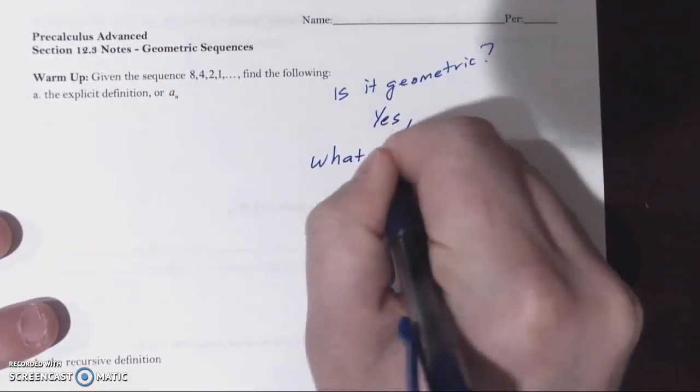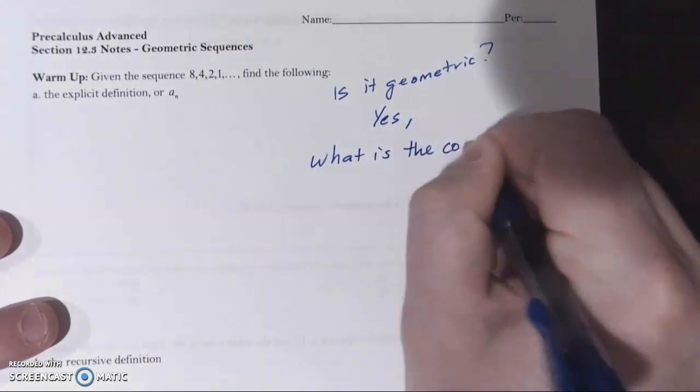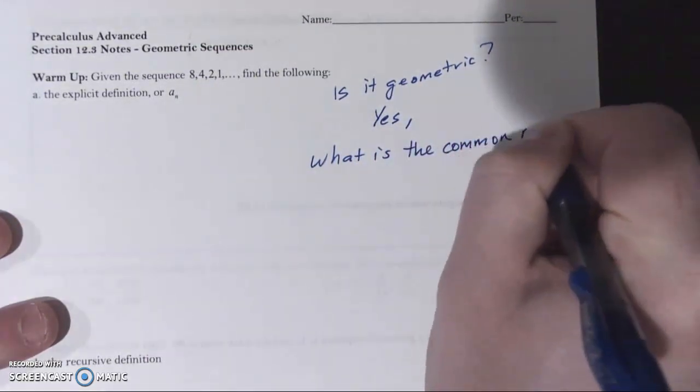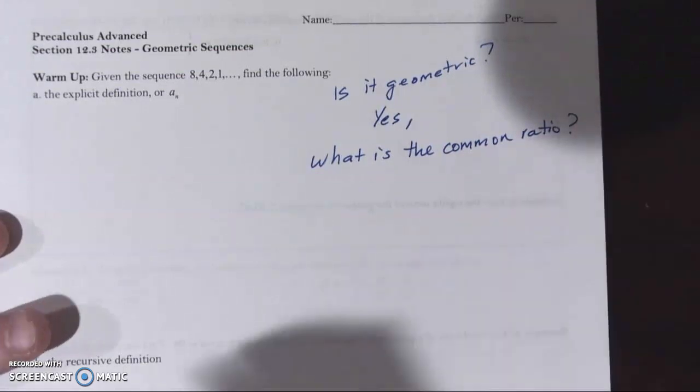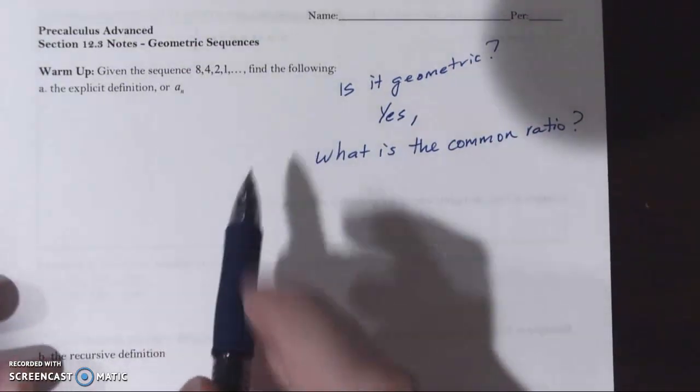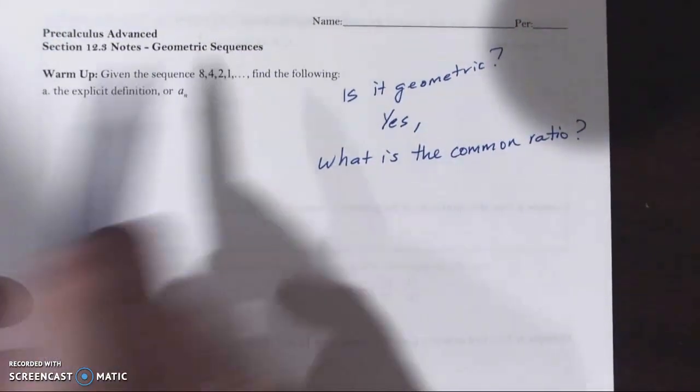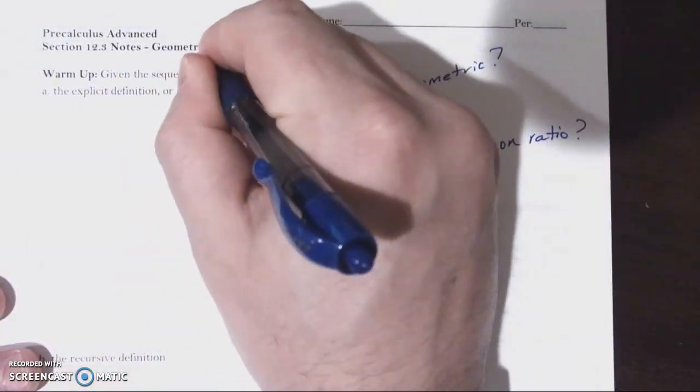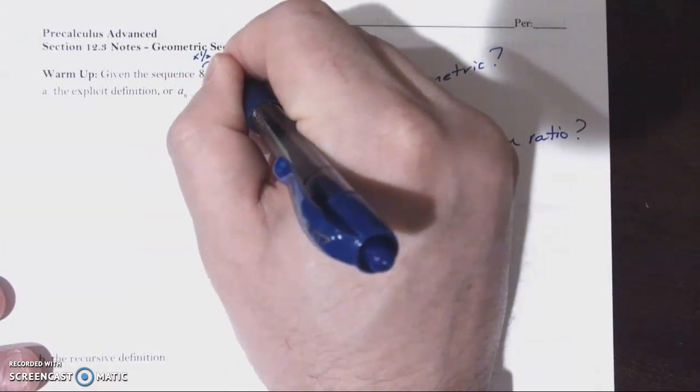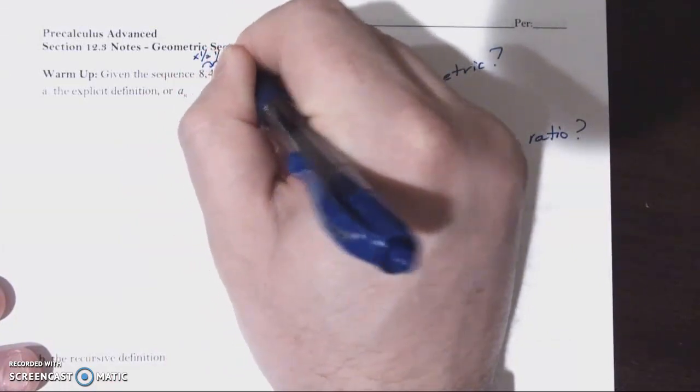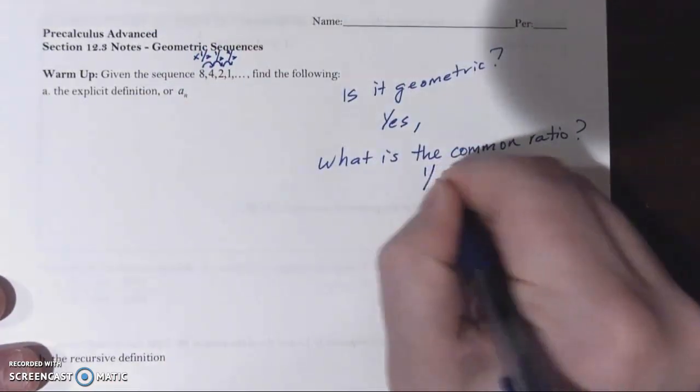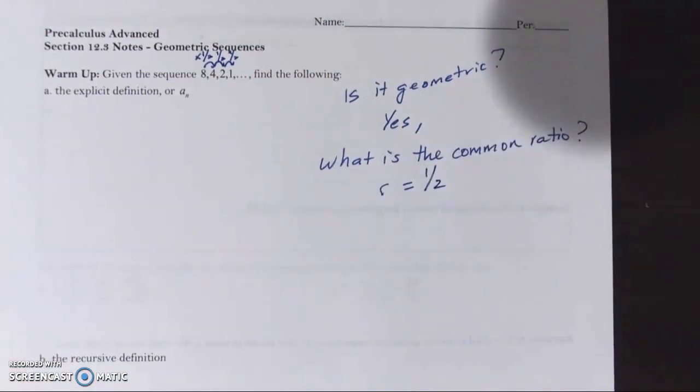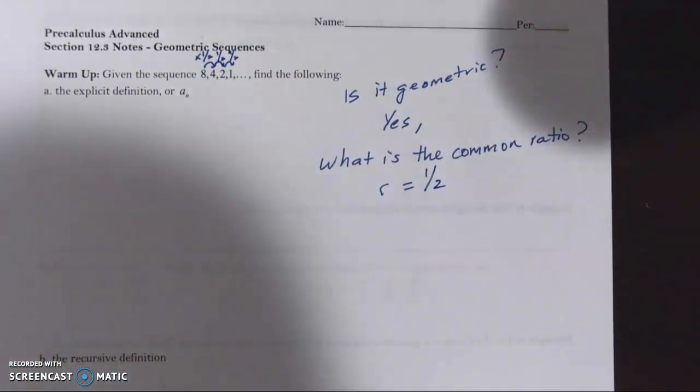Now what is the common ratio? These questions go hand in hand. The common ratio would be the constant that we're multiplying each preceding term by to get the following term. From eight to four, I'd be multiplying by one half. Same with four to two. Same with two to one. The common ratio is one half. That's really how I know that this is a geometric sequence. There is a common ratio.